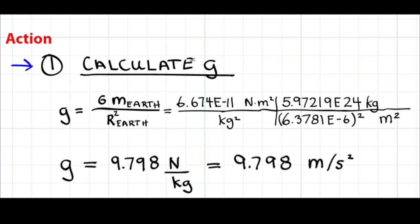Step one is to calculate the constant g. g was equal to the constant big G times the mass of the Earth divided by the radius of the Earth squared. So I put numbers in, kilograms cancels the squared term, the meter squared cancels. The result is 9.798 newtons per kilogram. And if I use the definition of a newton, I can also write this as 9.798 meters per second squared.